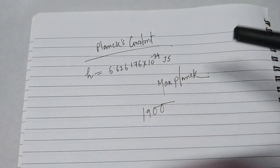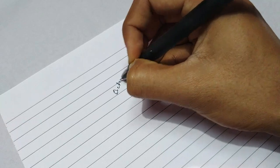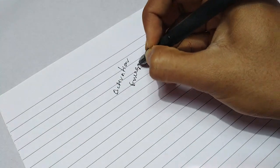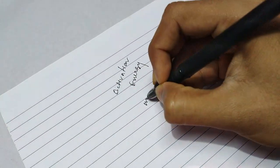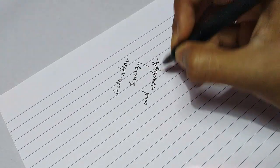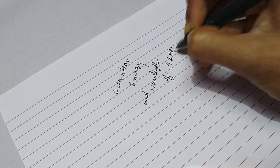If you want to know more about the theory behind Planck's constant then you can check the links in the description. To calculate the value of the constant, first we need to calculate two things: the activation energy and wavelength of four LEDs.